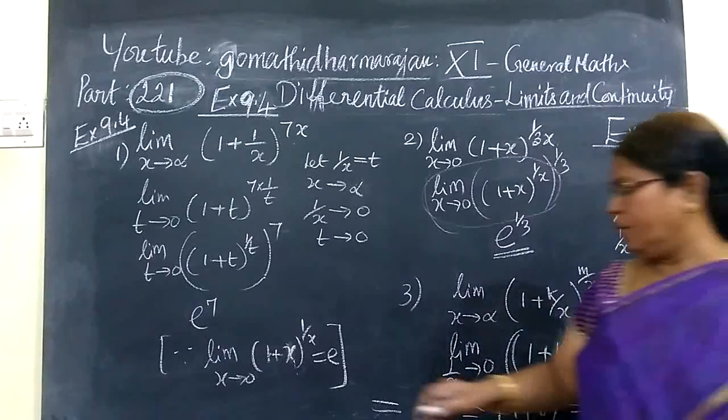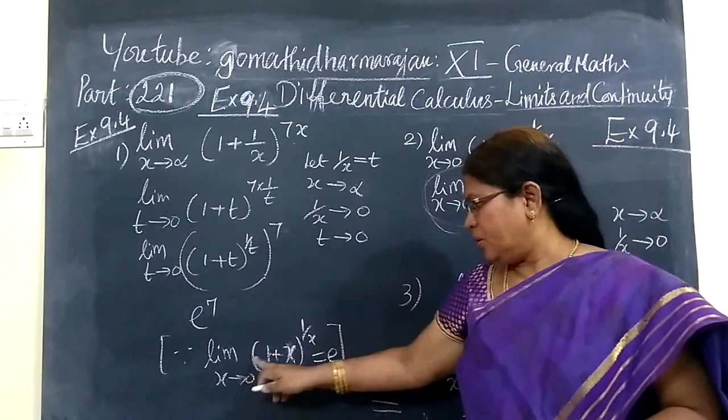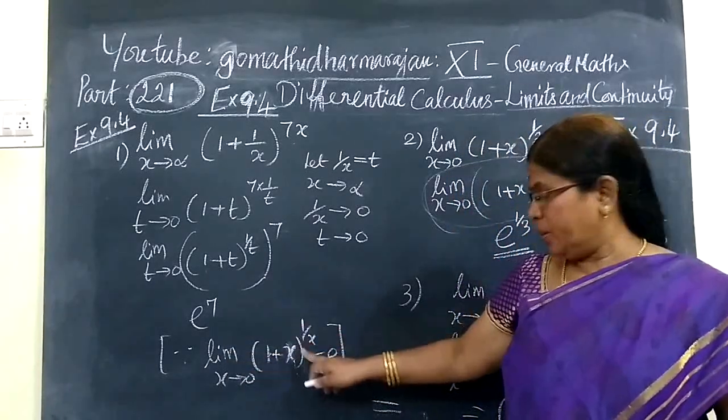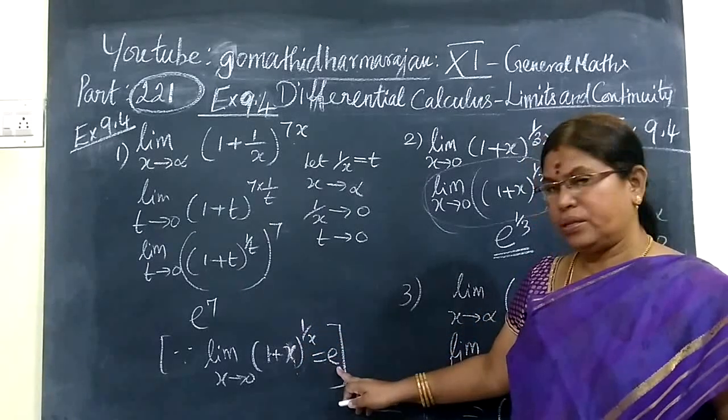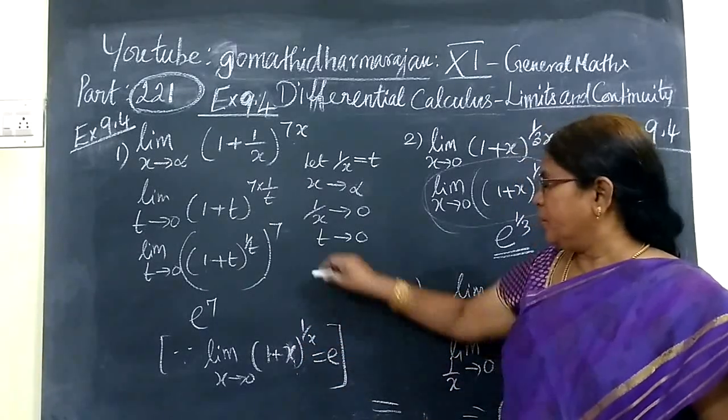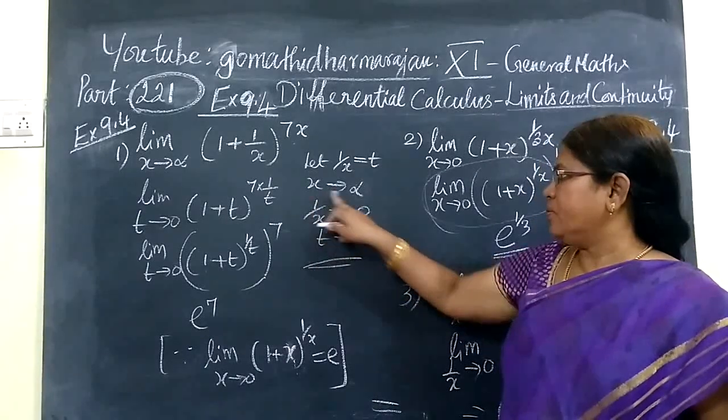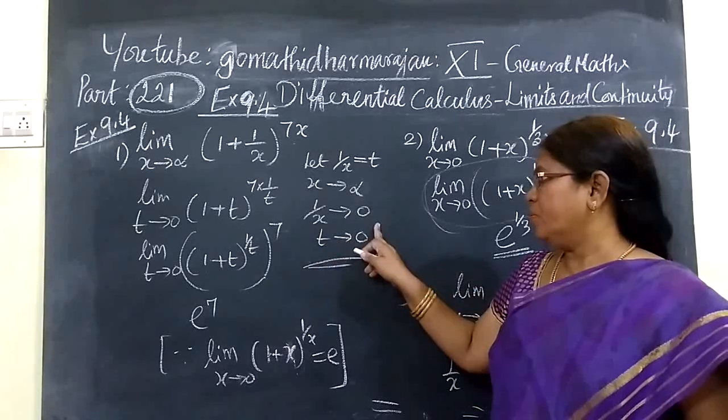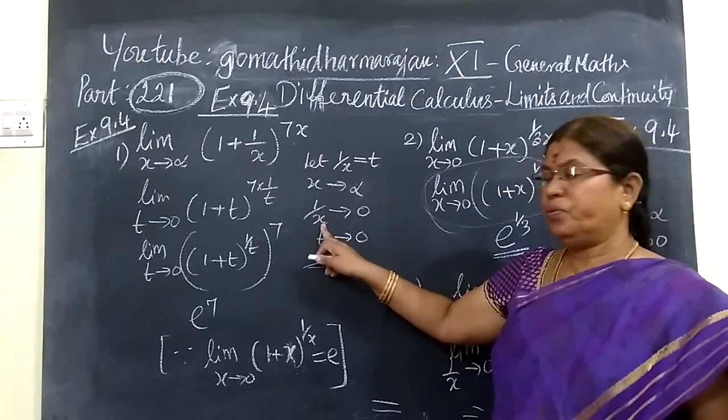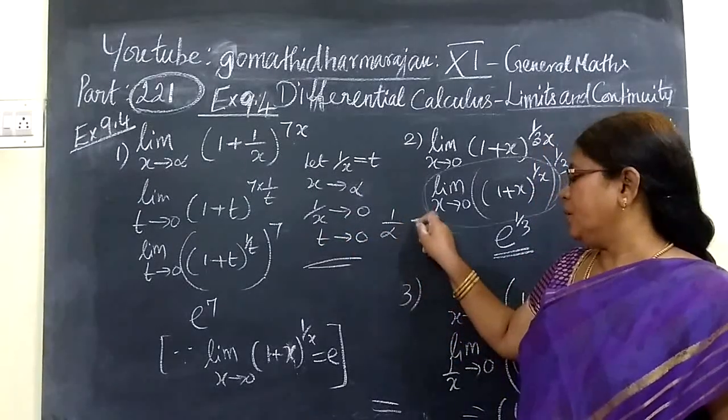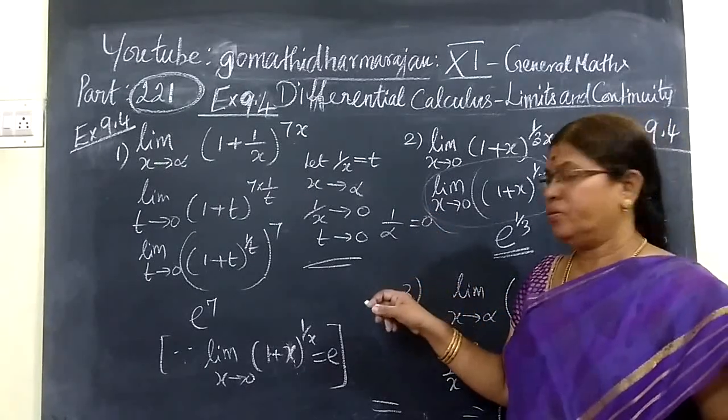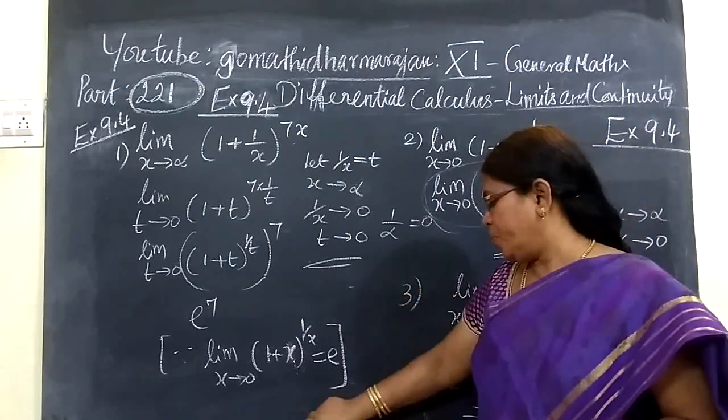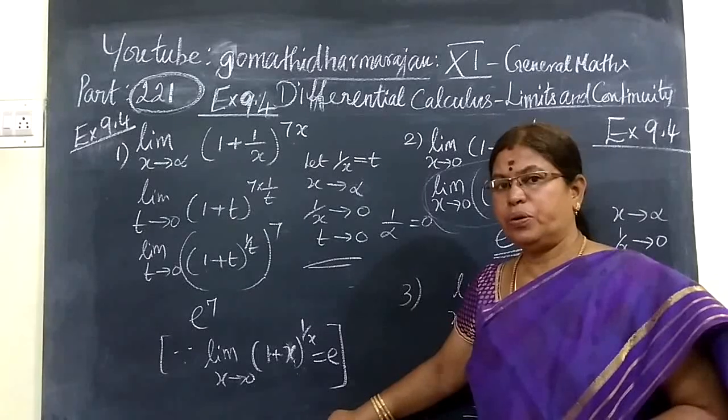So in this problem, we have drawn to a new formula. We get x tends to 0, 1 plus x to the power 1 by x, this is equal to e. As x tends to infinity, 1 by x tends to 0. So we have x tends to be increasing for us, and it is equal to 0 of this. So hope you understand, and then we meet in the next chapter.